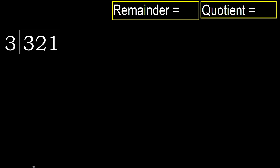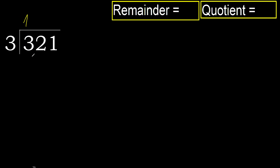321 divided by 3. 3 is not less, therefore work with 3. 3 multiplied by which number is nearest to 3 but not greater? 3 multiplied by 2 is 6 — 6 is greater. Multiplied by 1 is 3, which is not greater. Subtract, remainder 0.